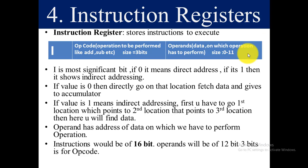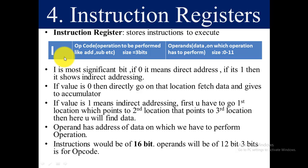The most important register is the instruction register. The instruction register is used to store instructions that need to be executed. An instruction consists of three parts. The first part is called I, which is the most significant bit. It can be either 0 or 1. If 0, it means a direct address; if 1, it indicates an indirect address.